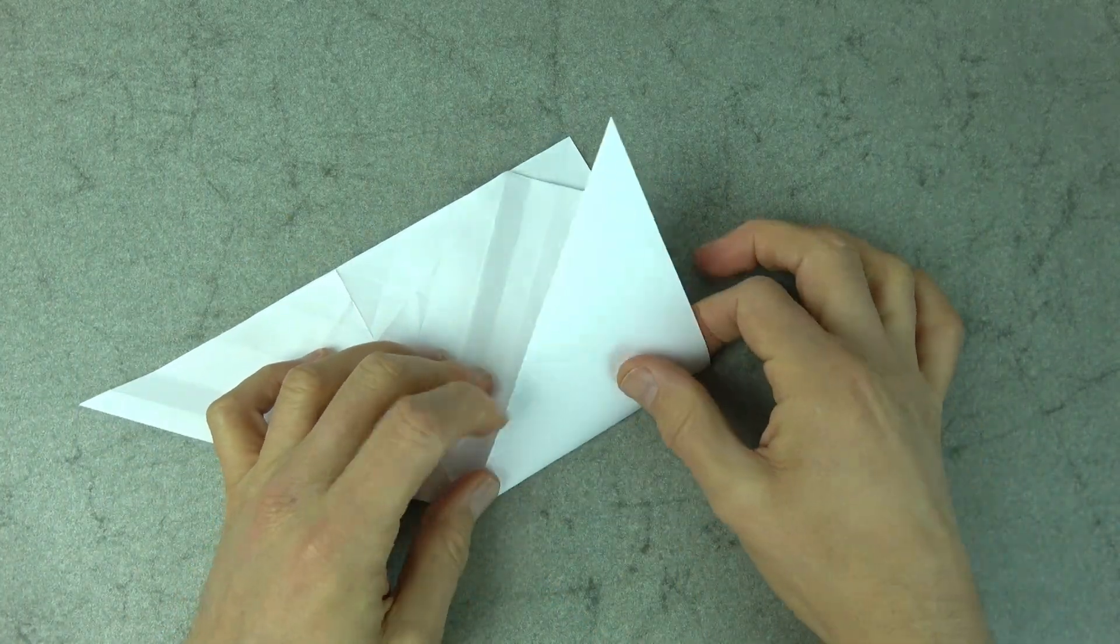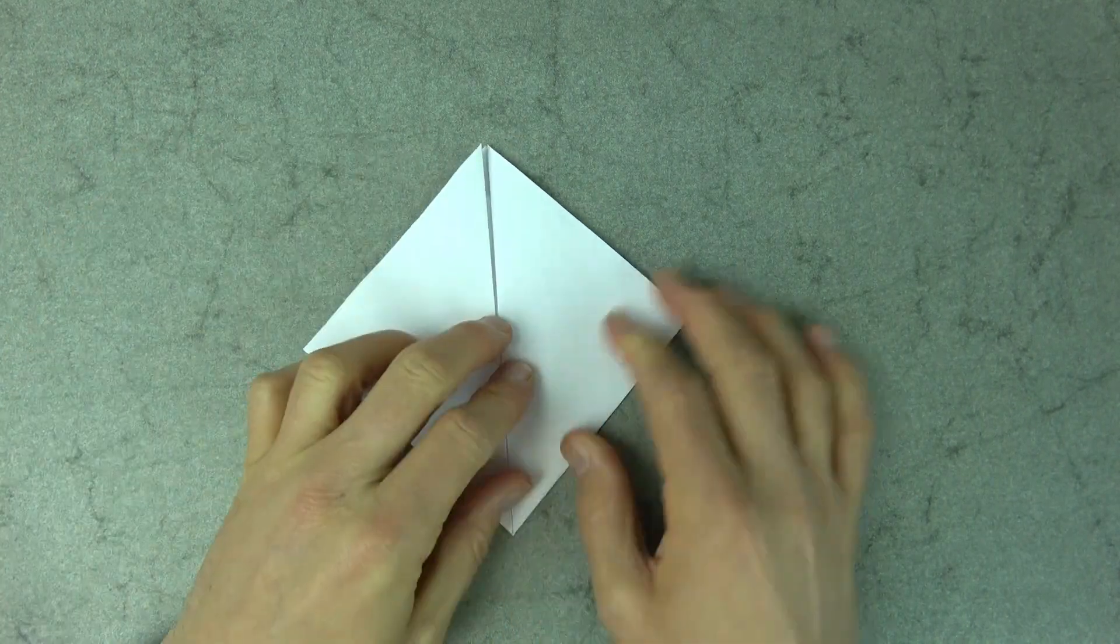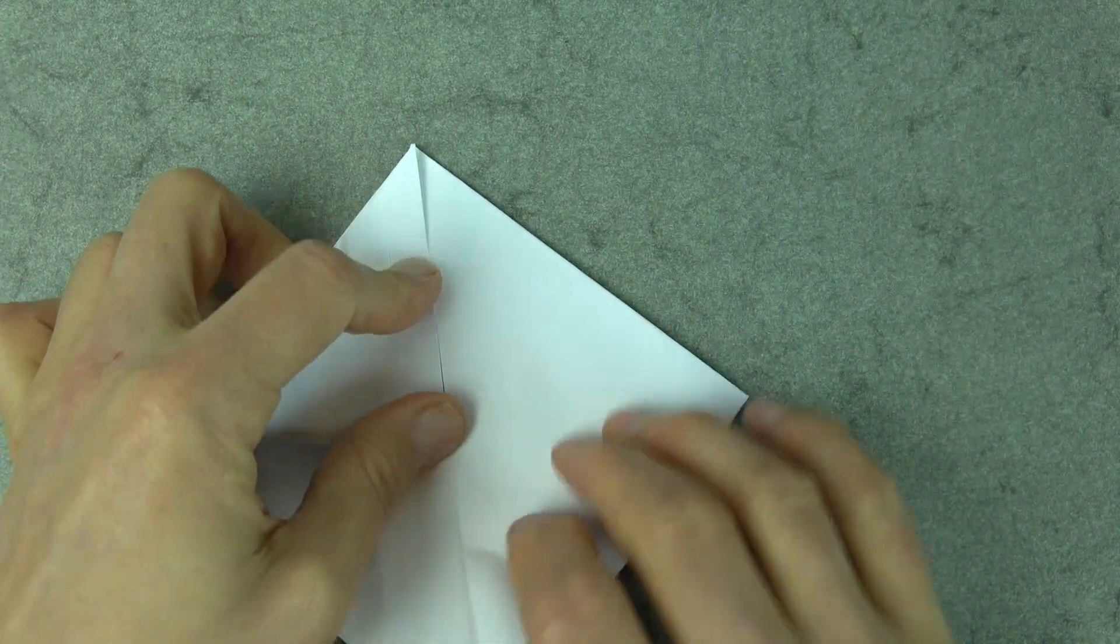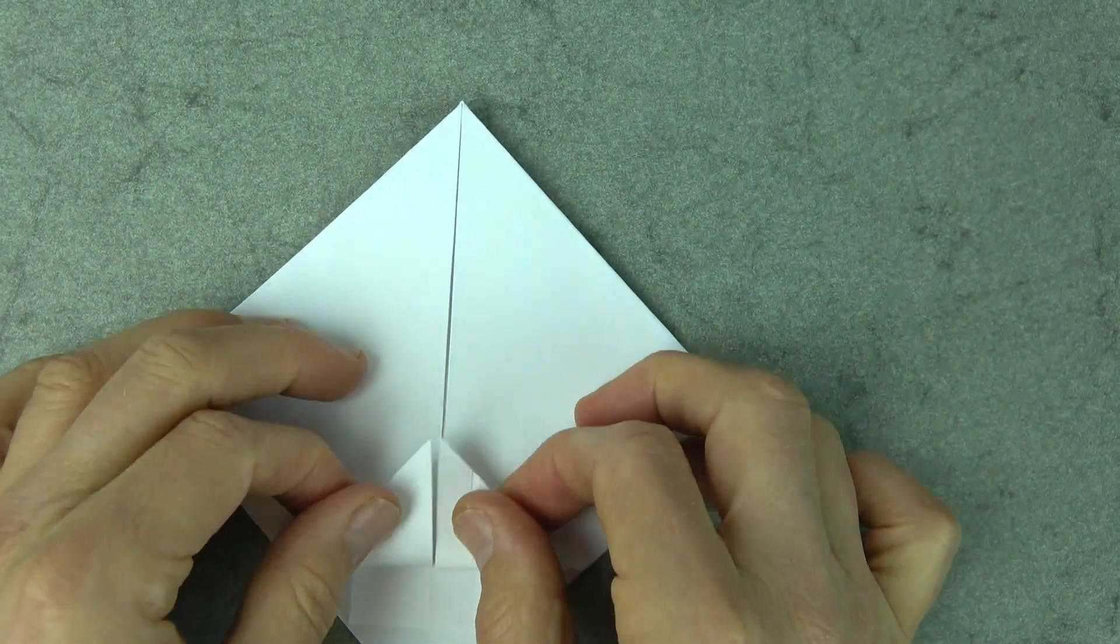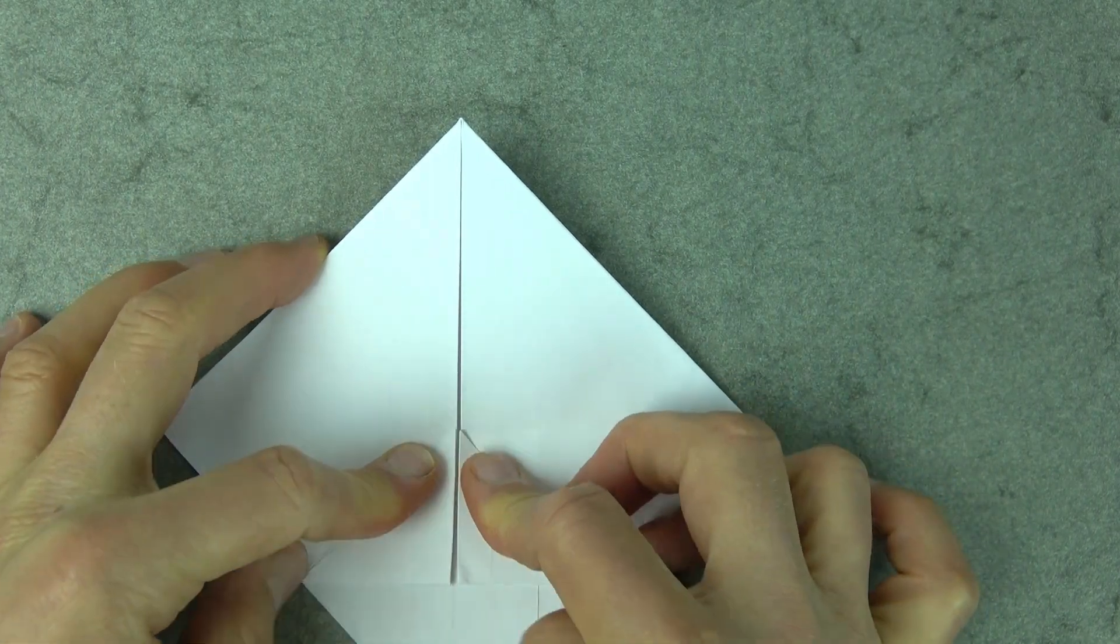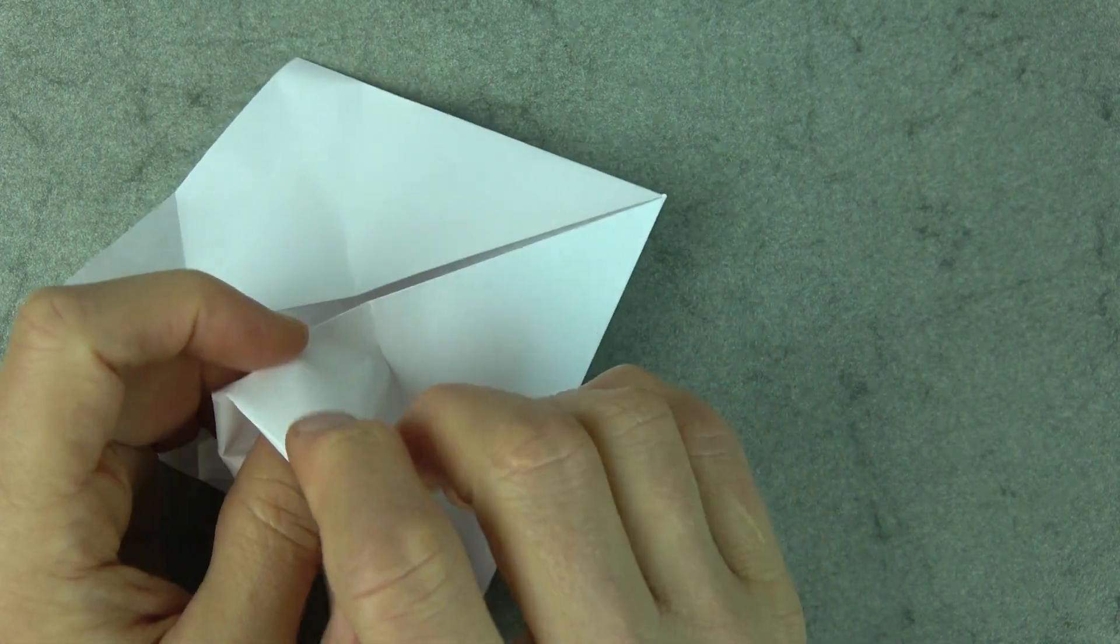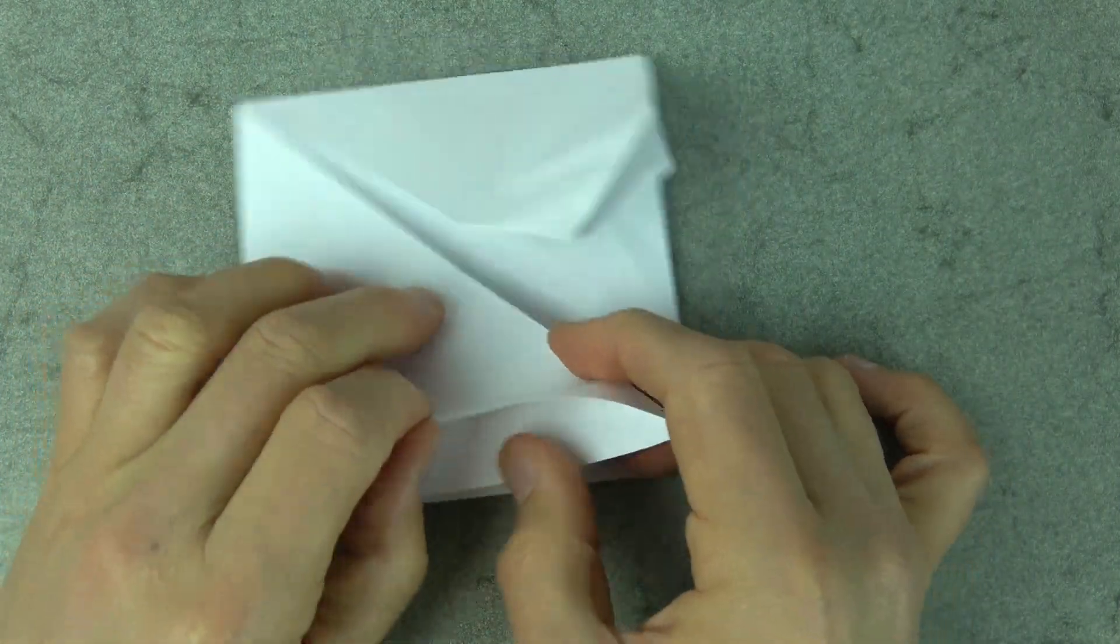And fold this flap up, and fold this flap up. Okay. Now, rotate and fold these two flaps to this point. You can just make pinch marks. There, and unfold, and fold them to the pinch mark. And unfold, and now open and just reverse them inside. And same on this side.